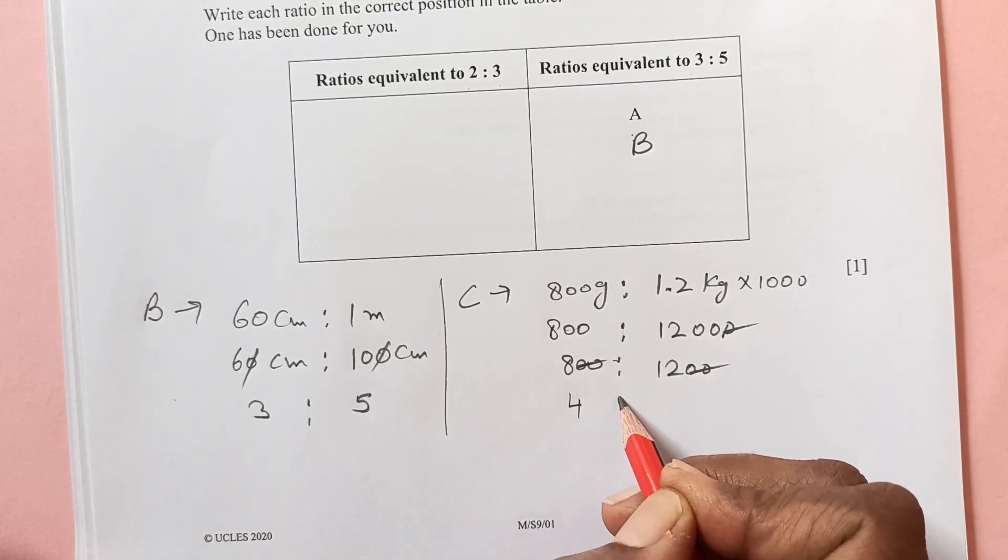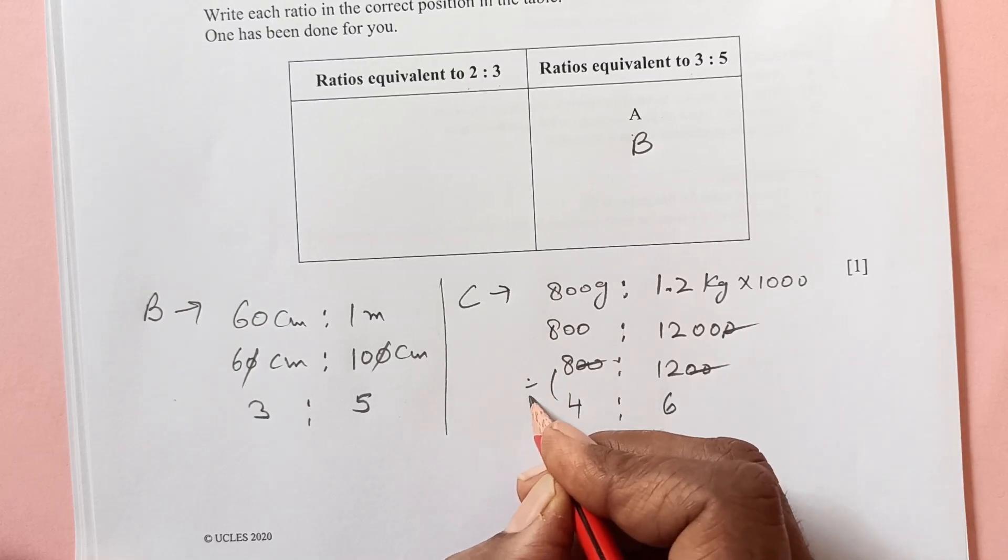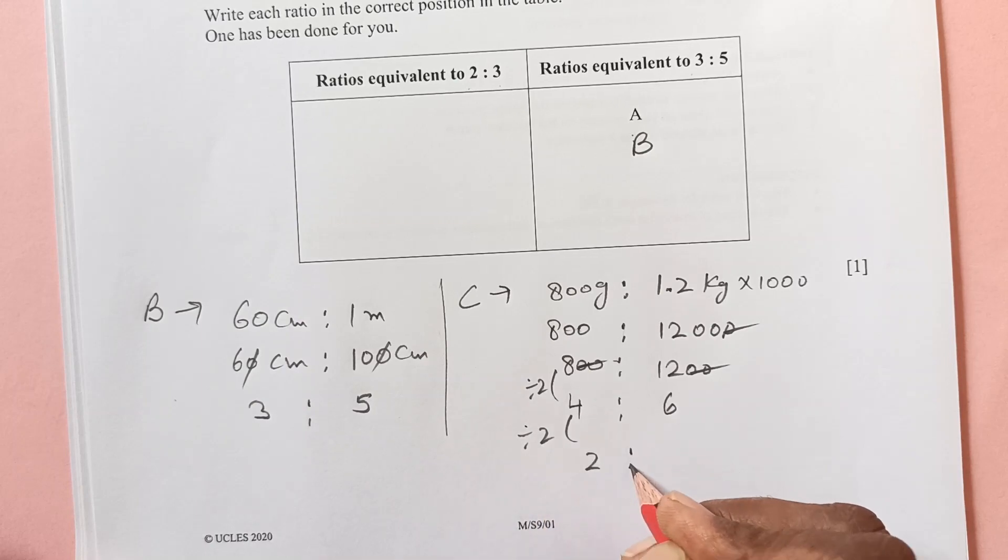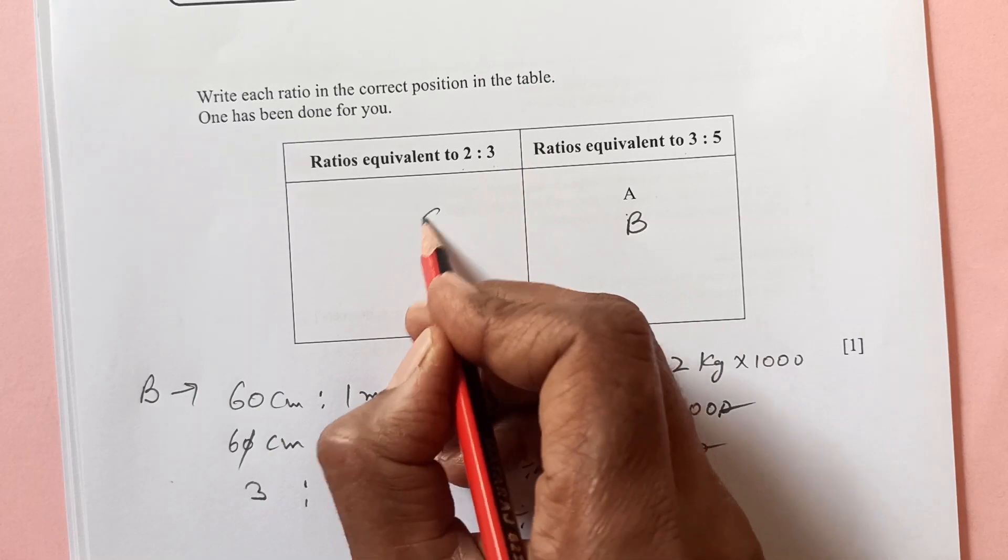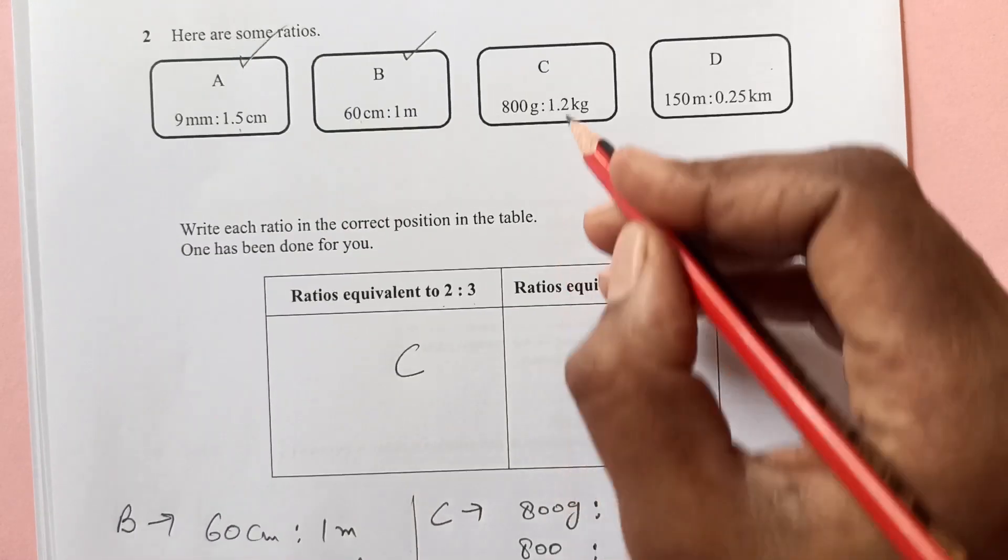Divide by 2, 2 times 4, then 2 times 6. Again divide by 2. This is 2:3, so C is the 2:3. C will be on the left hand side.